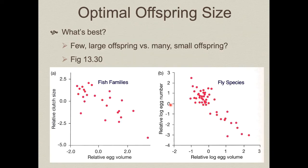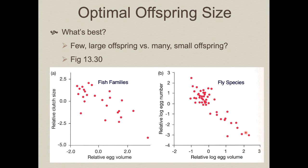What about optimal offspring size — do you produce very few large offspring or lots of small offspring? Different fish families show a negative relationship: some produce small eggs and can produce many of them, while those producing large eggs can produce very few. The same pattern appears in flies: small eggs allow large numbers; large eggs mean fewer can be produced. This negative relationship between clutch size and egg size is a fundamental trade-off. Which strategy maximizes reproductive success will vary from species to species depending on ecological conditions.